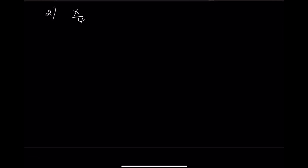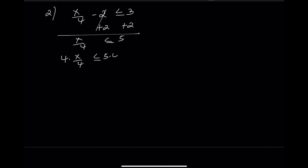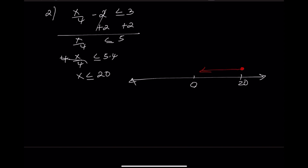Example 2: x divided by 4 minus 2 is less than or equal to 3. Add 2 to both sides — x divided by 4 is less than or equal to 5. Multiply both sides by 4 — x is less than or equal to 20. Draw a number line. Place a closed circle at 20 because it includes 20. Draw an arrow to the left. The solution is from negative infinity to 20. Interval notation: open parenthesis negative infinity comma 20, close bracket.